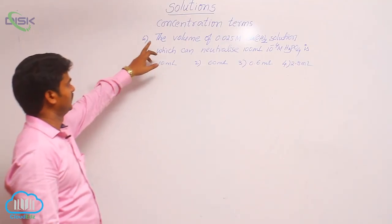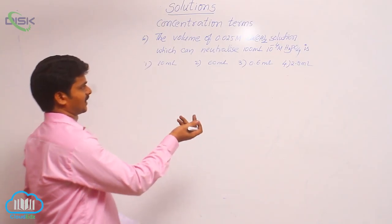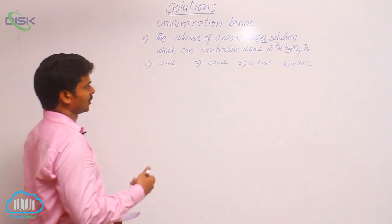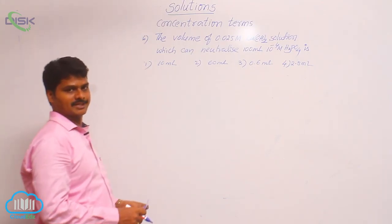This is the sixth question. See the volume of 0.025 molar calcium hydroxide solution which can neutralize 100 ml of 10 power minus 4 molar H3PO4.